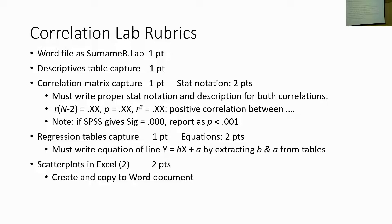When you are working on this as an assignment, you'll be copying and pasting these tables to your Word document. You'll also want to create the proper stat notation under your correlation matrix, which explains the actual numbers for the correlated relationship. After that, we're going to complete our regression table and then our scatter plots. These all add up and will be worth 10 points.